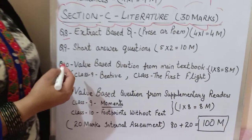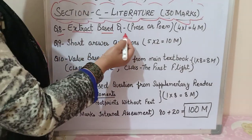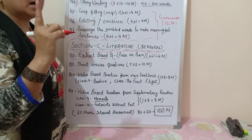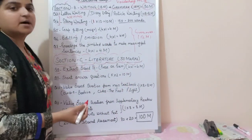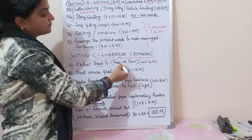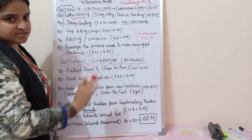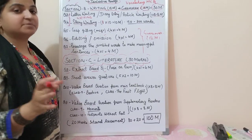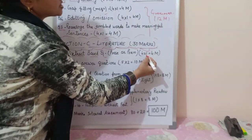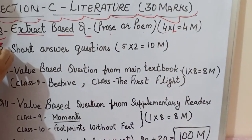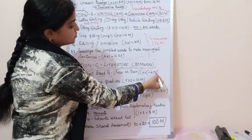Question number eight is an extract-based question. There will be two extracts — one may be from prose and one from a poem, from the main reader only. You have to attempt only one. There may be a choice given, or both passages can be from poems, or one poem and one chapter. You get four questions of one mark each, so question number eight carries four marks.